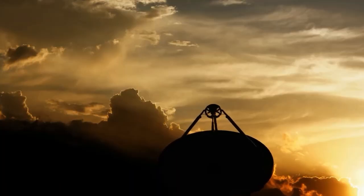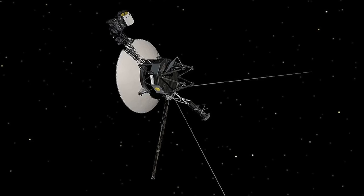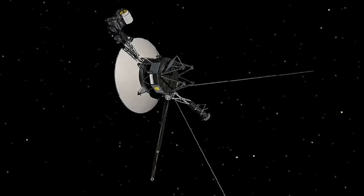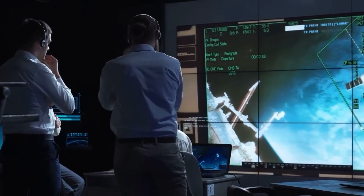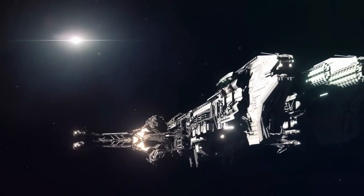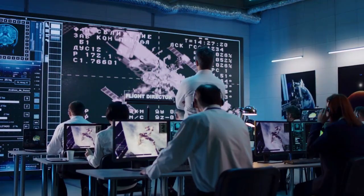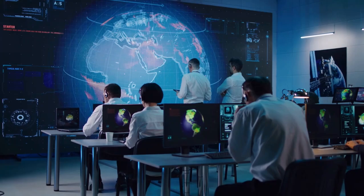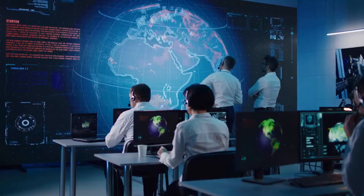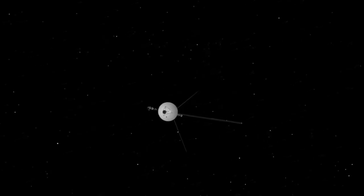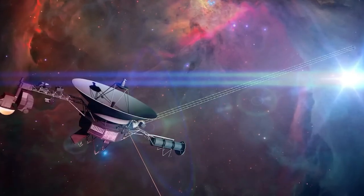Voyager's longevity stems from brilliant engineering foresight. It features redundant systems, duplicate computers and communication equipment that activate in the event of primary system failure. Radiation-hardening techniques protect its electronics, and engineers have implemented strategic power management, shutting down non-essential instruments as its nuclear power source gradually weakens. When attitude control thrusters began to degrade after decades of use, engineers reactivated backup thrusters that had been unused since 1980, and they worked perfectly. Every command sent to Voyager requires meticulous planning, as signals now take nearly 22 hours to make the round-trip at light speed.